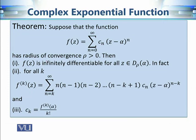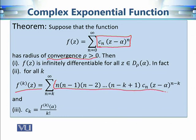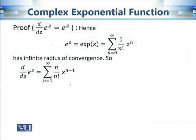Now let's recall the result about term-by-term differentiation: if the radius of convergence is known, then the function is infinitely differentiable for every element in the disk of convergence. The k-th derivative is computed by differentiating the n-th term k times and adjusting the summation index from 0 to k. We need this formula for k = 1.